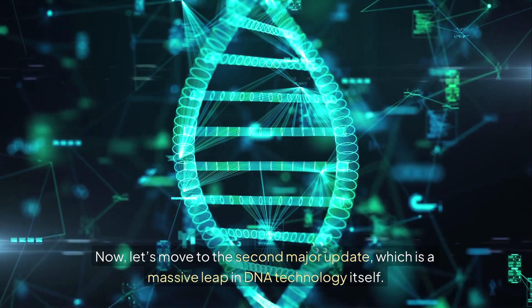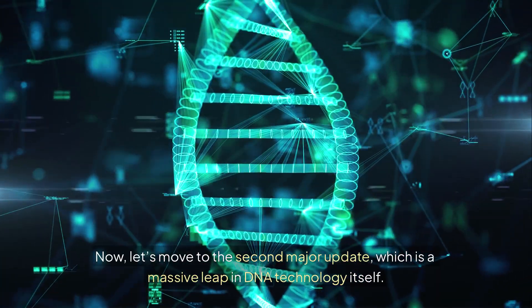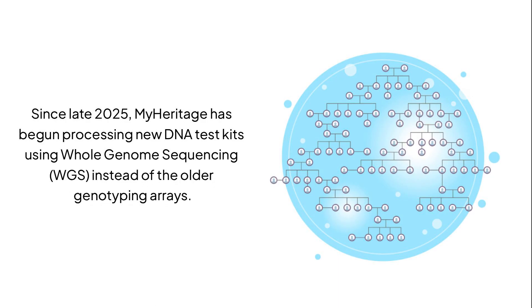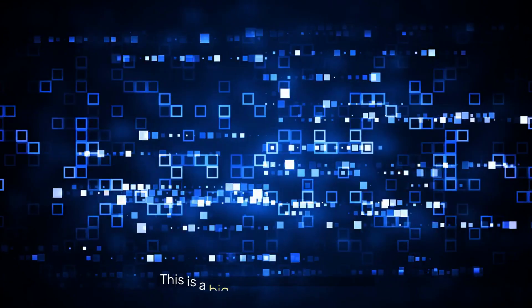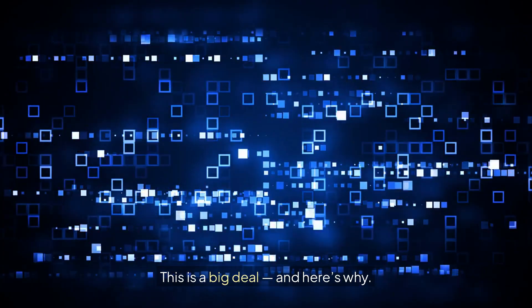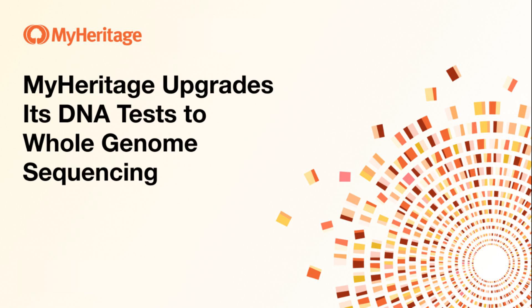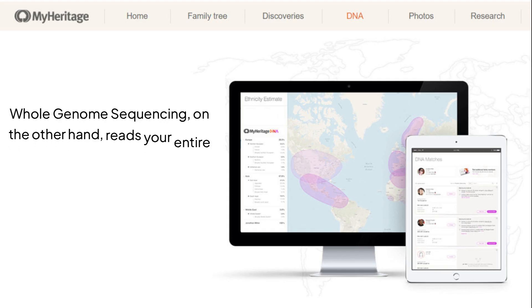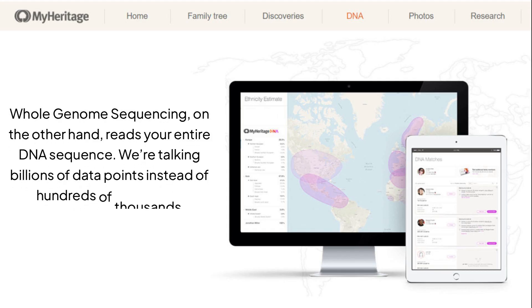Now let's move to the second major update, which is a massive leap in DNA technology itself. Since late 2025, MyHeritage has begun processing new DNA test kits using whole genome sequencing (WGS) instead of the older genotyping arrays. Traditional DNA tests, like the ones used by most major companies until recently, only analyze specific regions of your DNA — usually around 600,000 to 700,000 genetic markers. That's a lot of data, but it's still only a tiny fraction of your full genome. Whole genome sequencing, on the other hand, reads your entire DNA sequence — we're talking billions of data points instead of hundreds of thousands.